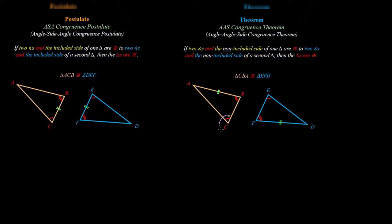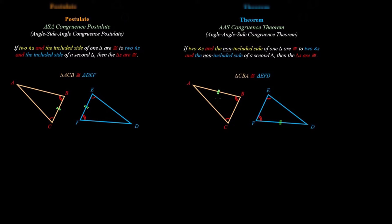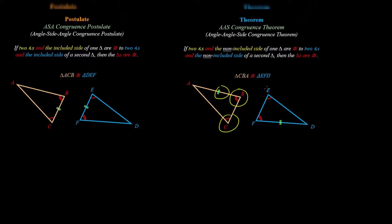So for angle-angle-side: if you have two angles — say angles C and D — this would be the included side, but in AAS we use the non-included side, the side that's not between those two angles. If two angles and the non-included side of one triangle are congruent to two angles and the non-included side of a second triangle, then the triangles are congruent. That's angle-angle-side.